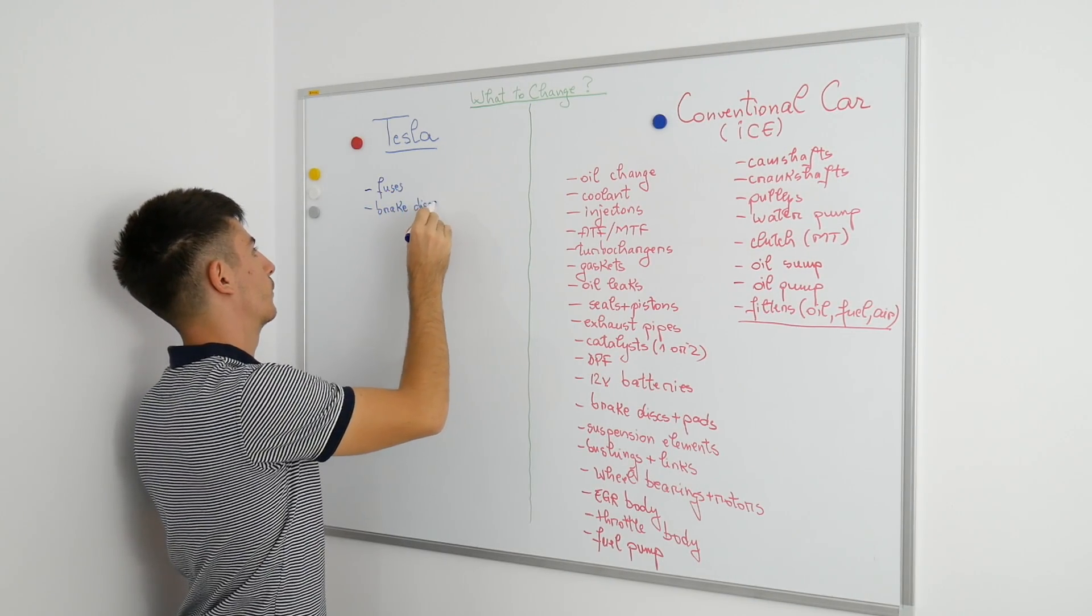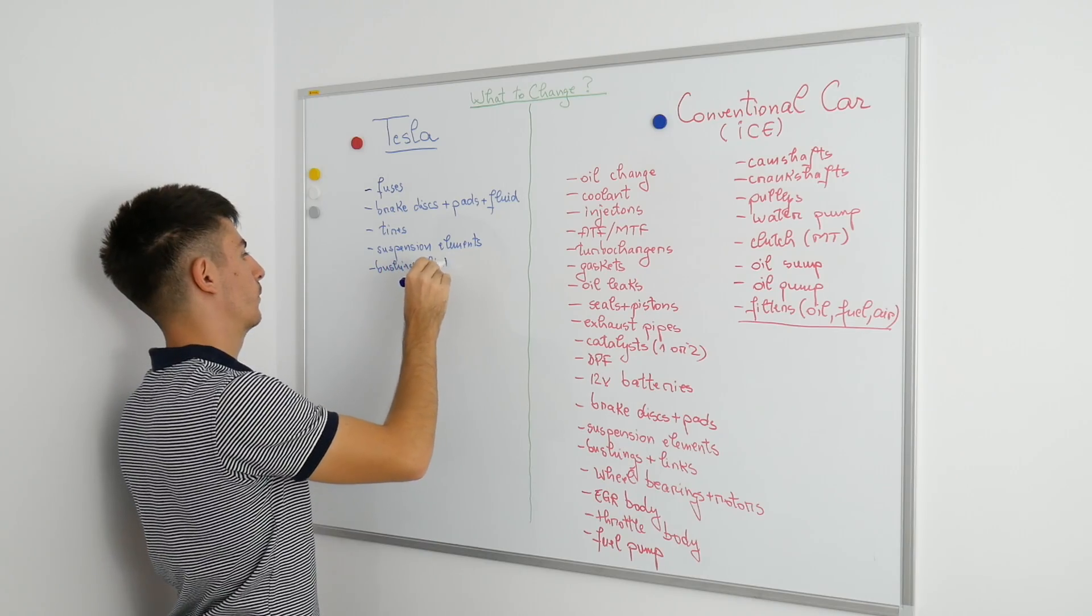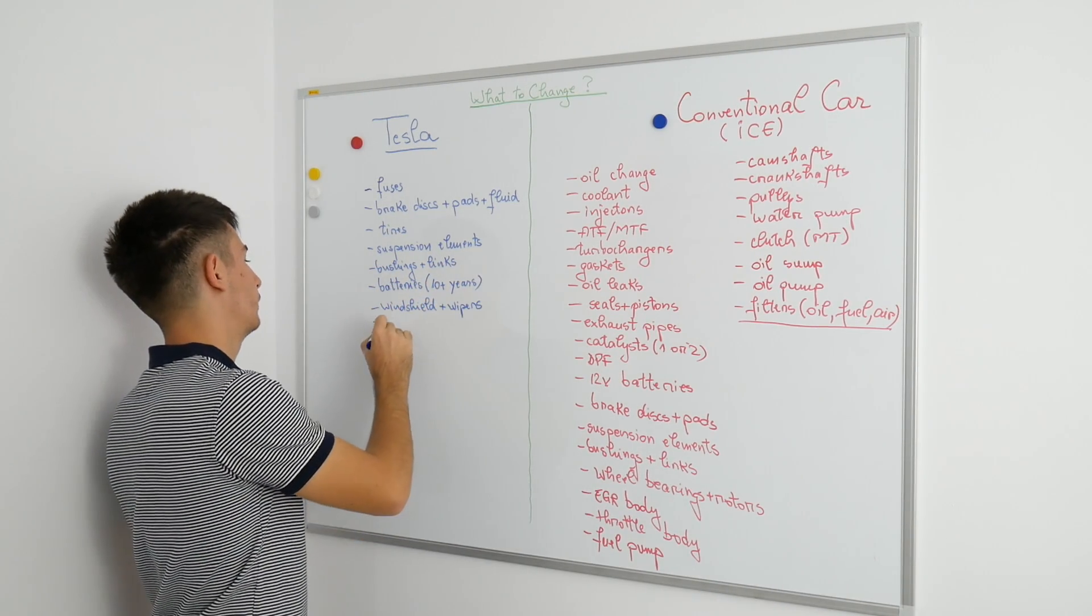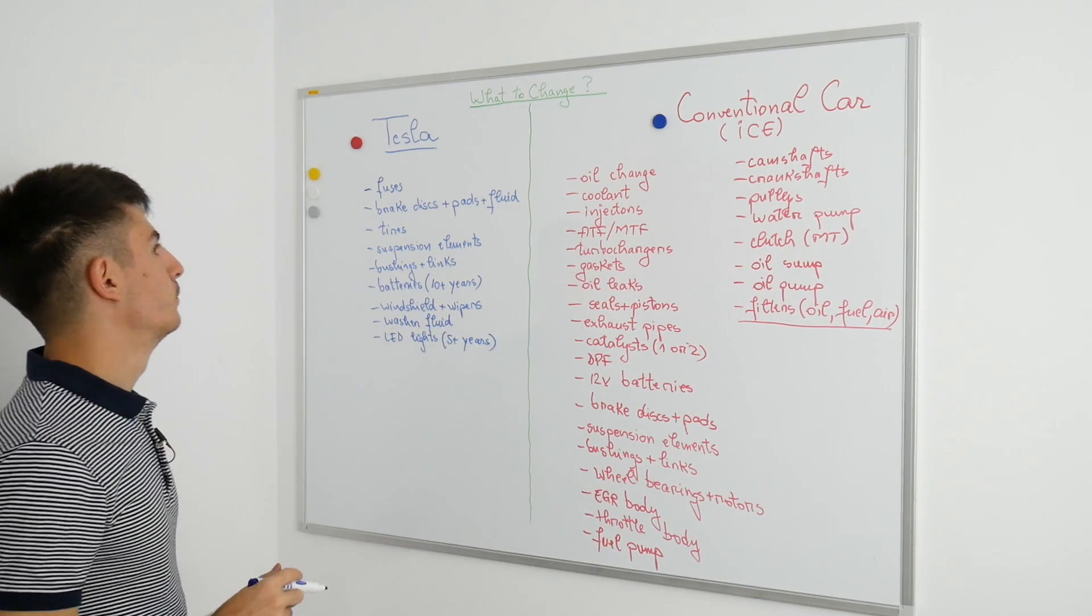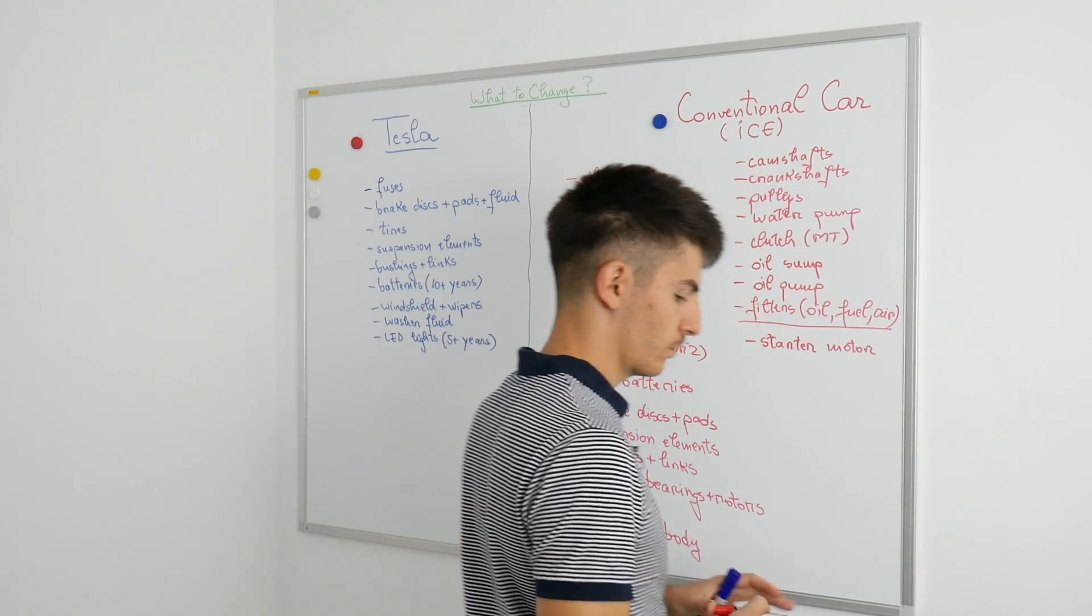In a Tesla and in any electric car, you don't need to worry too much about all those components. What you really need to do is to change the brake pads, the brake disc, the brake fluid, tires, a few LEDs if necessary, a windshield if it gets cracked or scratched, some freon for the AC system, and that's pretty much it.